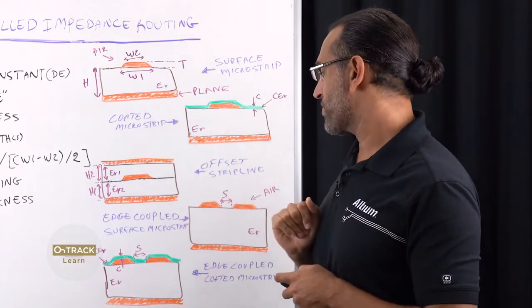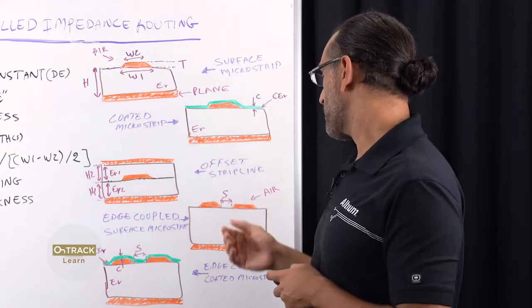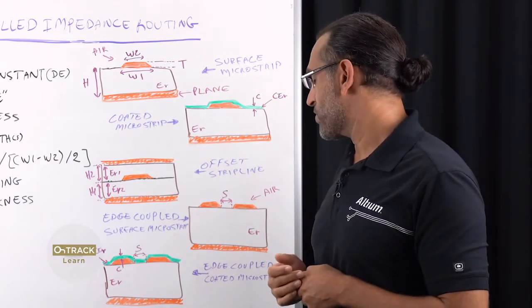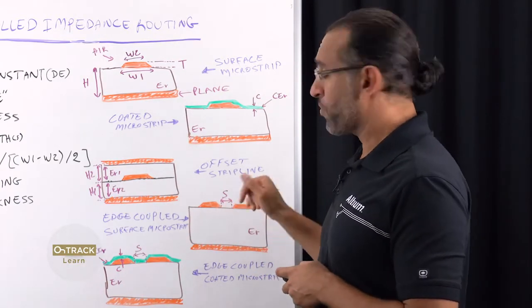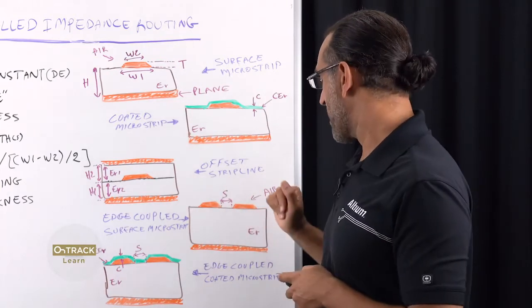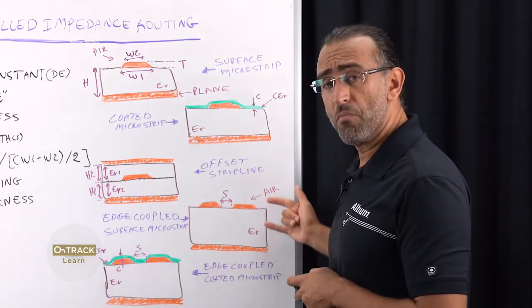Edge coupled surface microstrip, which is a differential pair configuration, if you have it in your design, that are exposed to air with no solder mask and a single plane from one side.